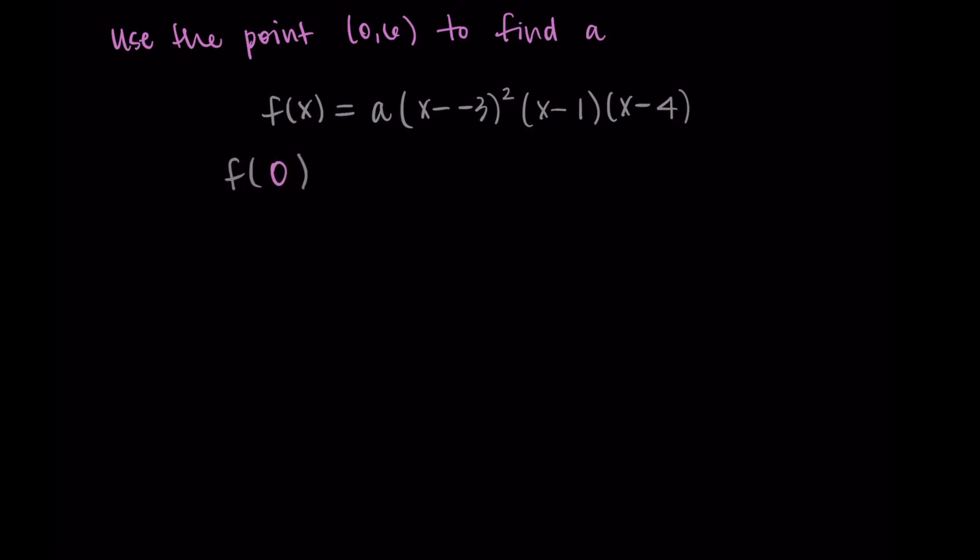So I have f of zero, so I'm substituting in zero, is equal to a times zero plus three squared times zero minus one times zero minus four. And then this is equal to six. The x value is zero, and the output value is six. Now we have an equation with just one unknown, and we can solve for that unknown, which is a.